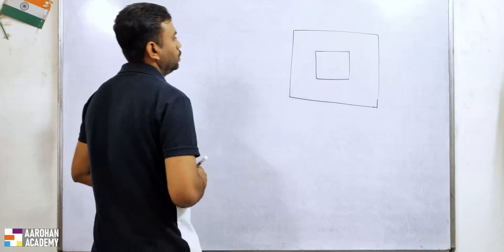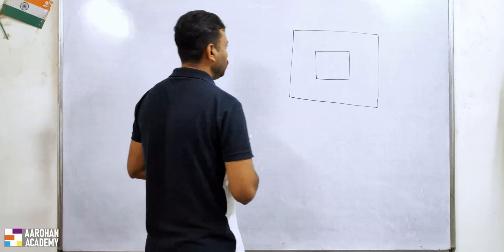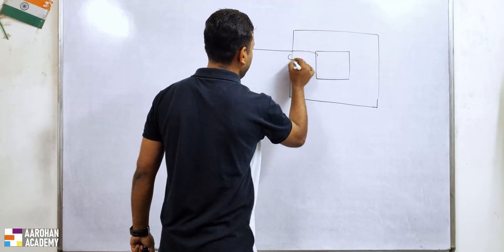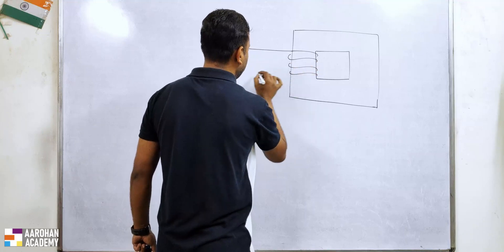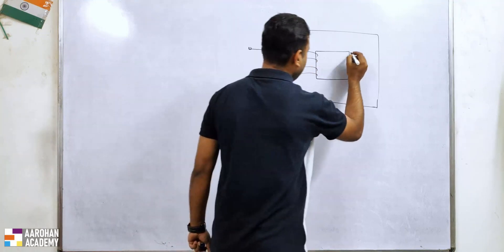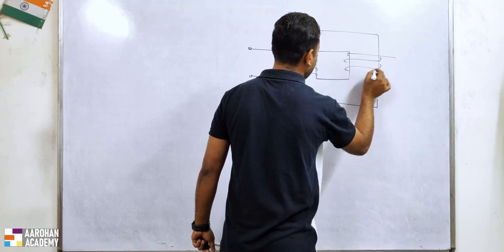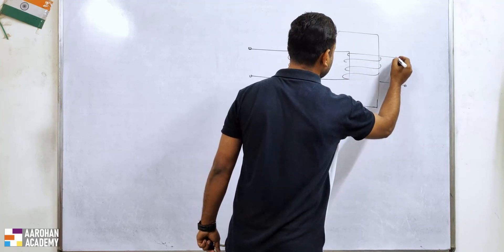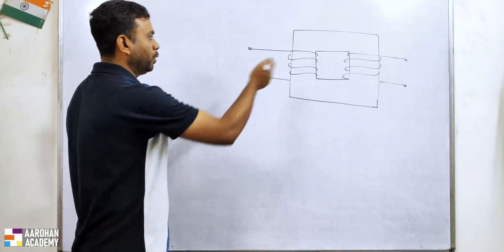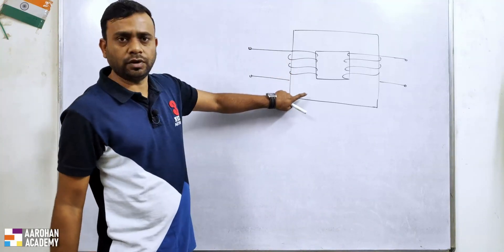I have drawn the transformer core and I am going to draw the transformer winding. This is the transformer winding and I am also drawing the transformer winding on the other port. So this is basically a two-port: this is the transformer winding and this is the transformer core.